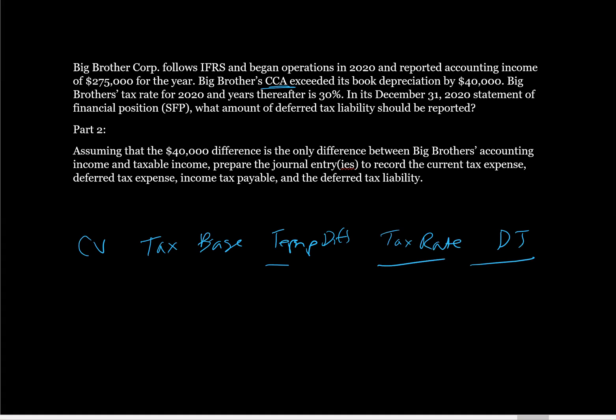We're in the same position we were before, where it's not telling us what the carrying value is. All it says is that the CCA was more than accounting by $40,000. So we know the tax value is going to be $40,000 more than the carrying value, and so the temporary difference here is going to be our $40,000.